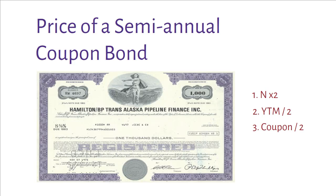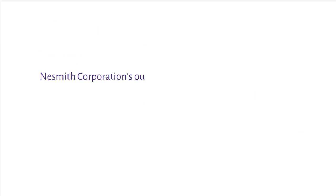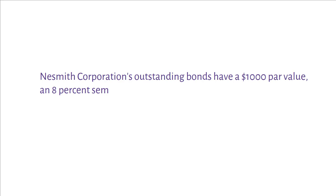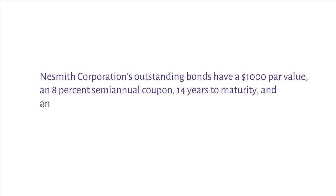To find out the maximum price a bond buyer should pay for a semiannual bond, we can use a simple example. Nesmith Corporation's outstanding bonds have a $1,000 par value, an 8% semiannual coupon, 14 years to maturity, and an 11% YTM. What is the bond's price?